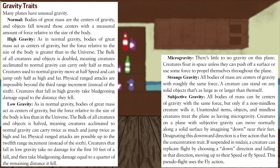High gravity is predictably tough on any creature acclimated to normal gravity. The bulk of all creatures and objects is doubled. Speed, as well as jump height and distance, are halved for creatures used to normal gravity. Physical ranged attacks can't be made past the third range increment. Finally, falling creatures take bludgeoning damage equal to the distance in feet that they fell.